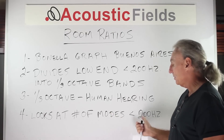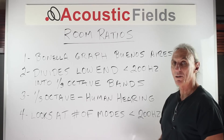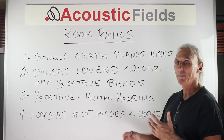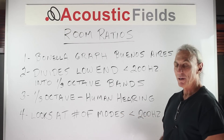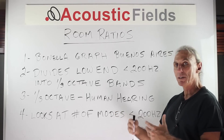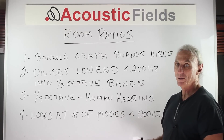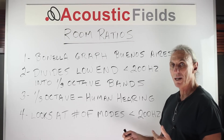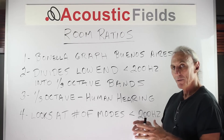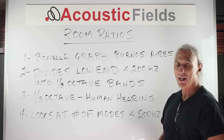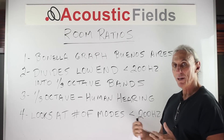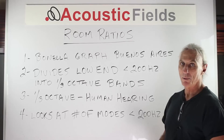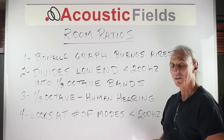He looked at the number of modes below 200 cycles across a whole series of width, height, and length dimensions, and he came up with a graph that allowed these modes to be separated by 10 Hz increments or higher. So he found a way of looking at room sizes and ratios where the room modal structure was 10 Hz apart — he calculated that 10 Hz was a nice spread between modes to avoid too many audible differences in the signal presentation within the room.